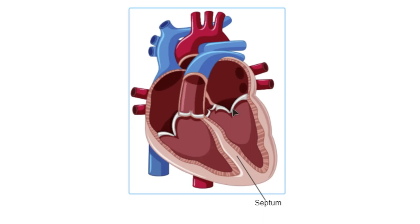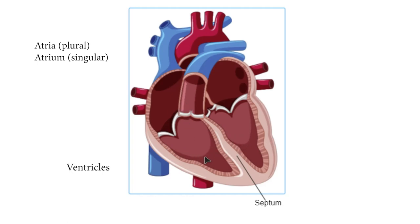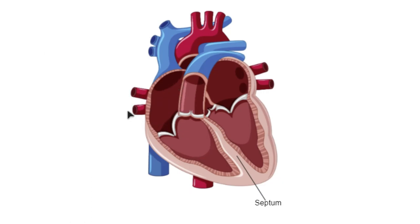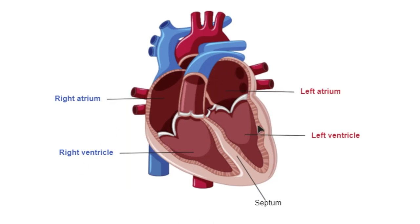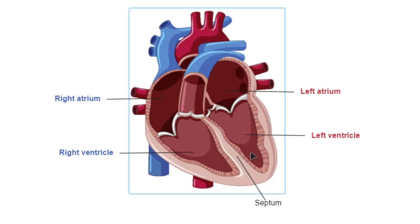You can see that there are four chambers in the diagram. The two top chambers are called atria, or atrium in singular, and the two chambers at the bottom are called the ventricles. So this side is called the right atrium, and the bottom part will be the right ventricle. That would be the left atrium, and the bottom part will be the left ventricle.